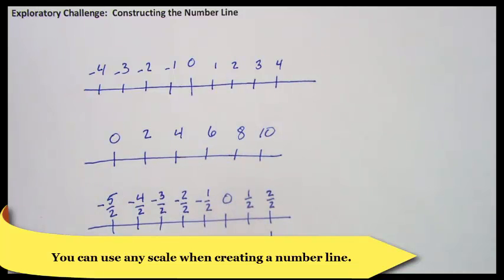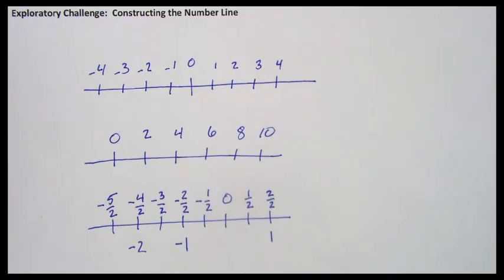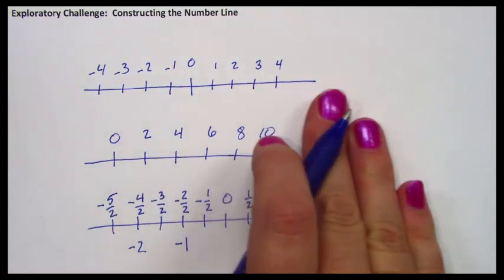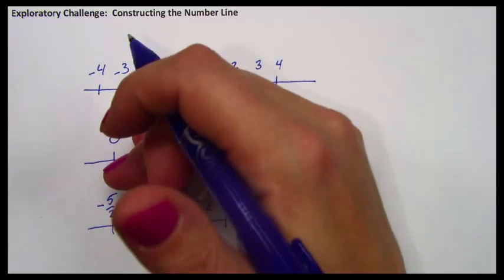So there are some different ways that you can make a number line. Now, all of these number lines I've drawn have been horizontal number lines. They've been going across, like the horizon. The horizon is the meeting of the sky and the ground.